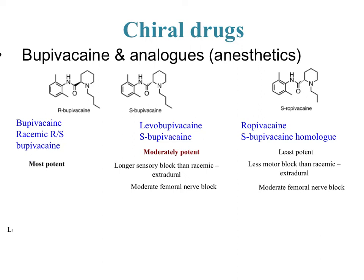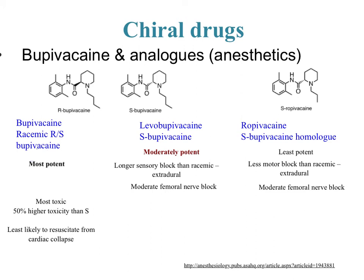You might ask: if the racemic is the most potent, why make the others? The downside of the racemic mixture is it's highly toxic — 50% higher toxicity than the S of bupivacaine alone. The R is probably what makes it more potent but also more toxic, and the most likely outcome is cardiac collapse from which resuscitation may be impossible. So no one is going to use the racemic bupivacaine — unlike ibuprofen, the consequence here could be serious injury or death.